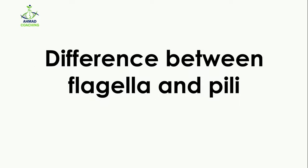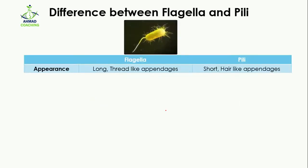First, in terms of appearance, flagella are long and thread-like appendages. As you can see, this part of the bacterial cell is the flagellum — it is long and thread-like. In the case of pili, they are short appendages. You can see here that they are very short.